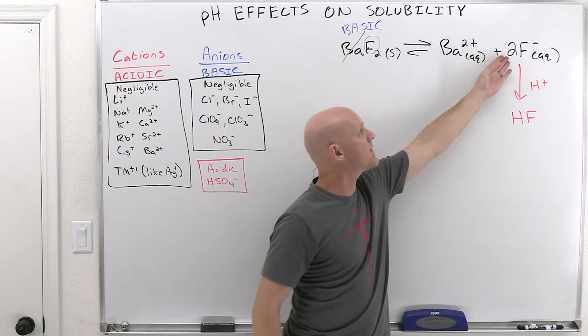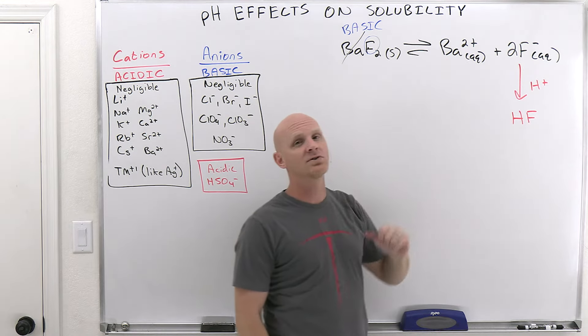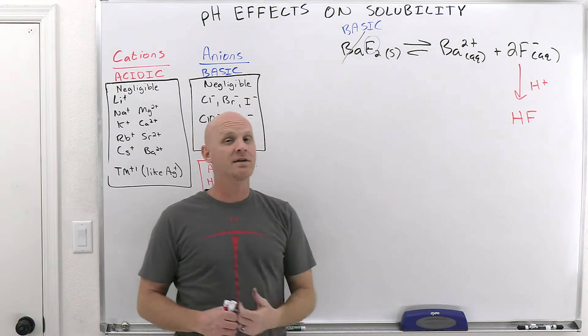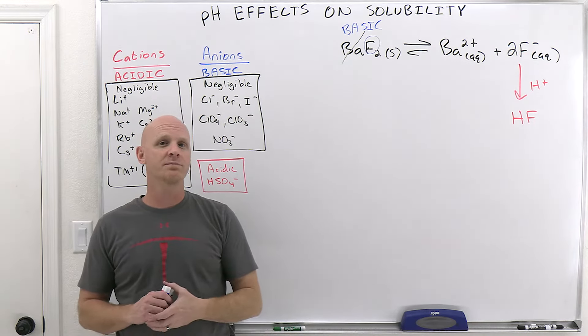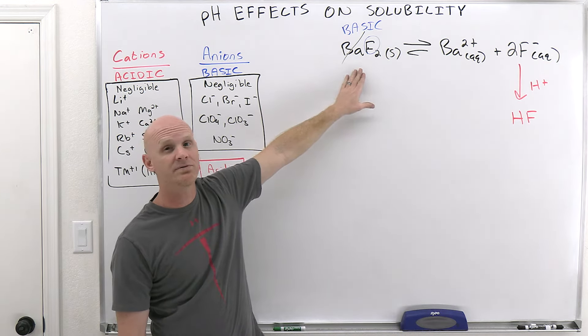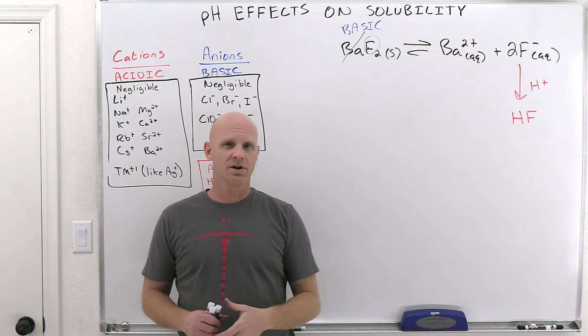well, then I don't have enough fluoride here to be at equilibrium and more barium fluoride is going to have to dissolve to create more of that fluoride. And if more barium fluoride is dissolving, that means I've just increased the solubility of barium fluoride. And so as we can see with a basic salt like barium fluoride, adding any acid is going to increase its solubility.